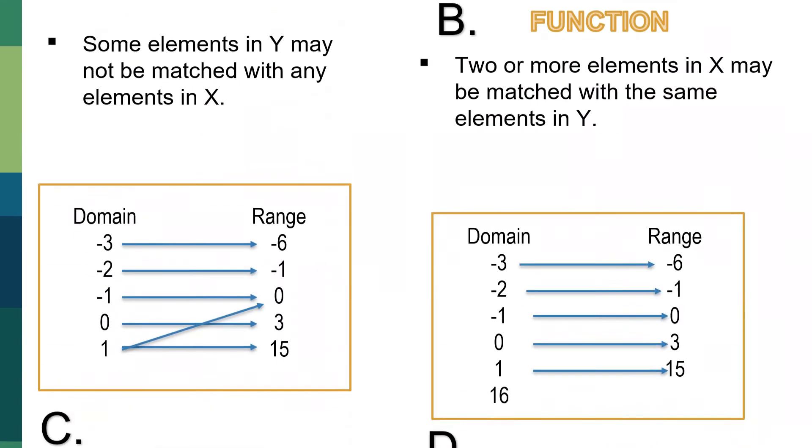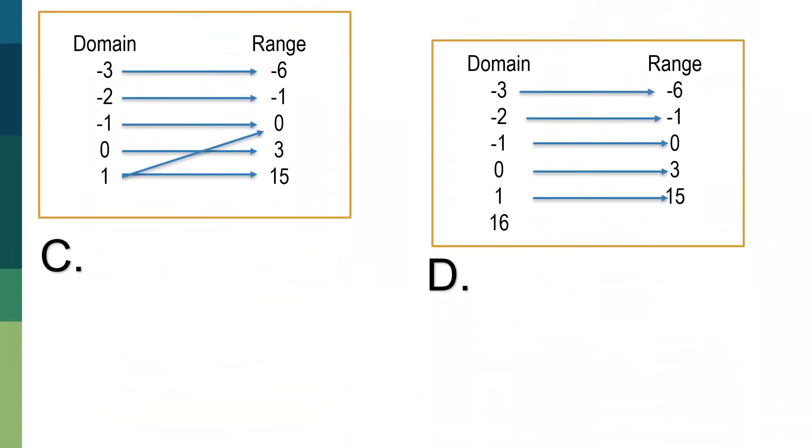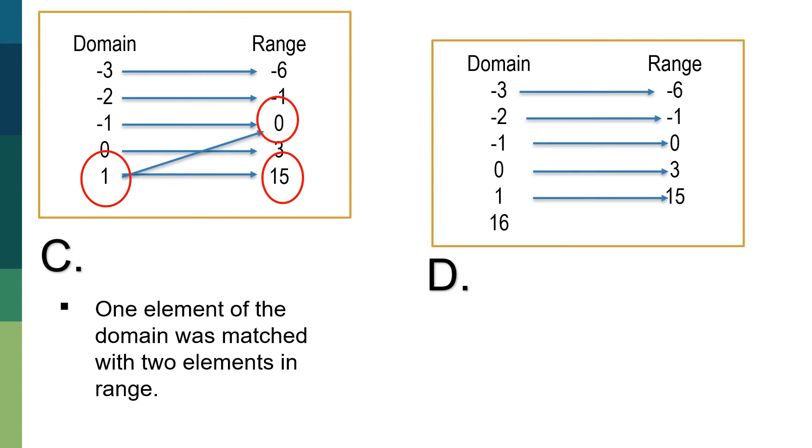Now let us try to look at these examples. For the first one, what can you observe with a given relation? Okay, so 1, as the element of the domain here is paired, not just to 0 for the range, but also to 15. So 1 element of the domain was matched with 2 elements in range. So it doesn't go with a qualification or with the characteristics of a function. Therefore, we can conclude that this relation is not a function.